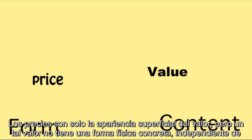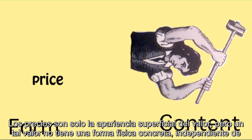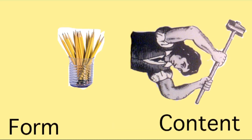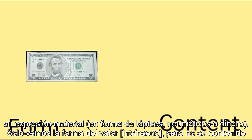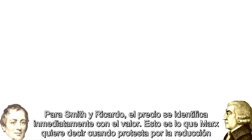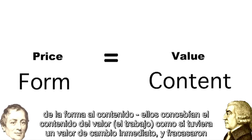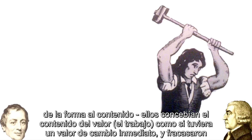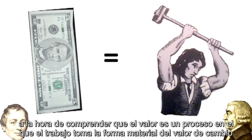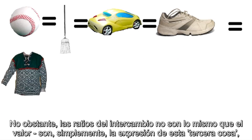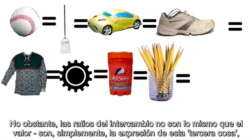Prices are just the surface appearance of value. But this value has no fixed physical form independent of its material expression in pencils, tires, or money. We only see the form of value, not the content. For Smith and Ricardo, price is immediately identifiable with value. This is what Marx means when he says they reduced form to content. They treated the content of value — labor — as if it immediately had an exchange value. They failed to understand that value is a process whereby labor takes on the material form of exchange value. But these exchange ratios are not value. They are merely the expression of this third thing called intrinsic value.